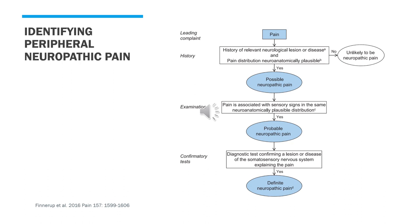A clinical algorithm to assist clinicians in identifying peripheral neuropathic pain has been described. A patient with pain and a history of relevant neurological lesion or disease, or pain distributed in a neuroanatomically plausible fashion, is deemed possible neuropathic pain. On clinical examination, pain in association with other sensory signs in a neuroanatomically plausible distribution may then be considered probable neuropathic pain. A diagnostic test confirming a specific lesion or disease in the somatosensory nervous system that explains the pain leads to a determination of definite neuropathic pain.